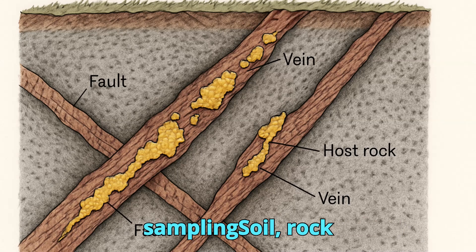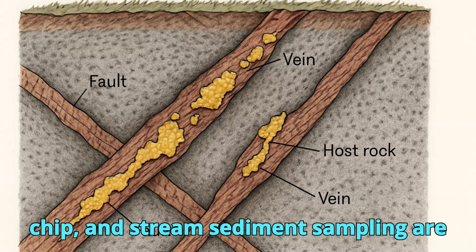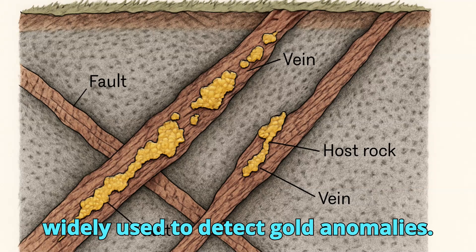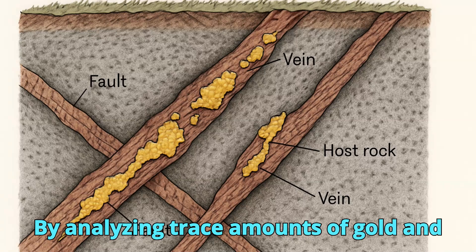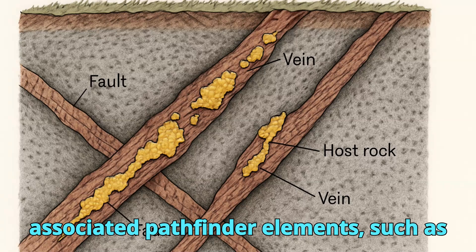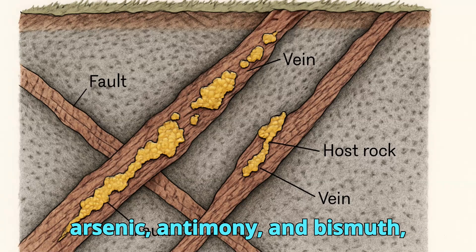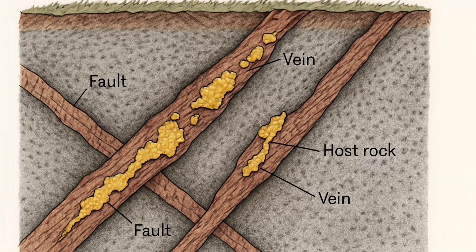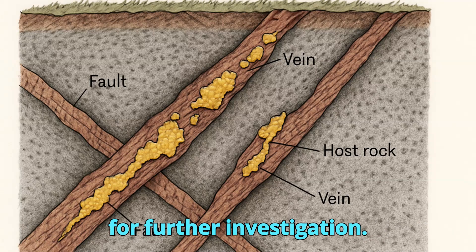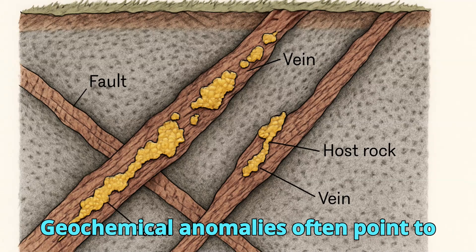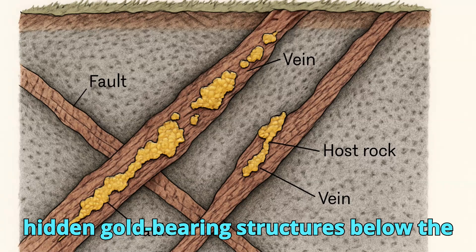Geochemical Sampling. Soil, rock chip, and stream sediment sampling are widely used to detect gold anomalies. By analyzing trace amounts of gold and associated pathfinder elements — such as arsenic, antimony, and bismuth — geologists can narrow down target areas for further investigation. Geochemical anomalies often point to hidden gold-bearing structures below the surface.